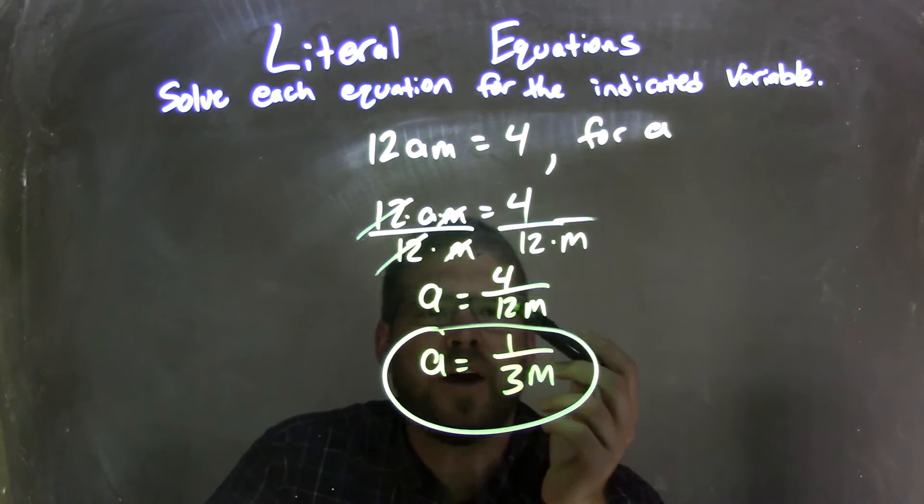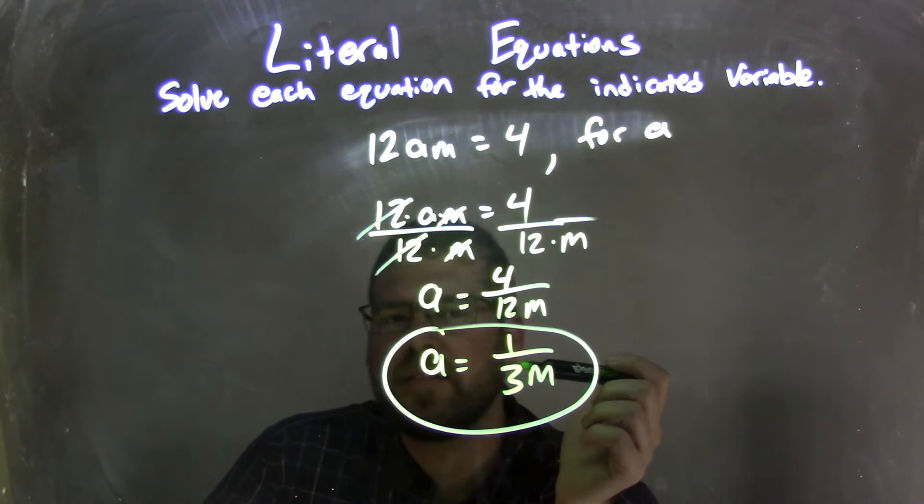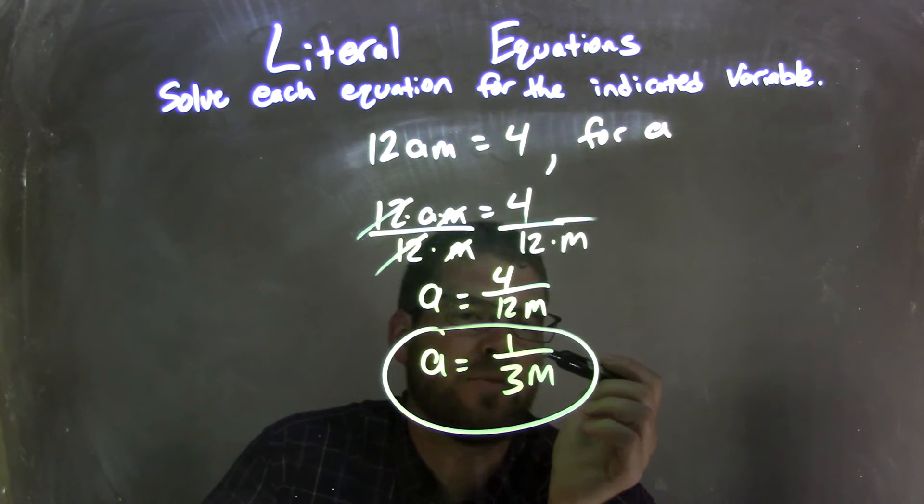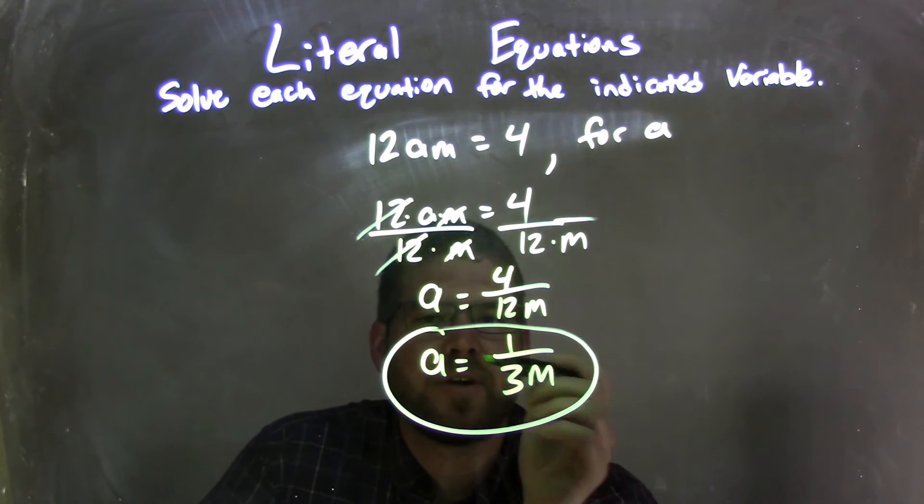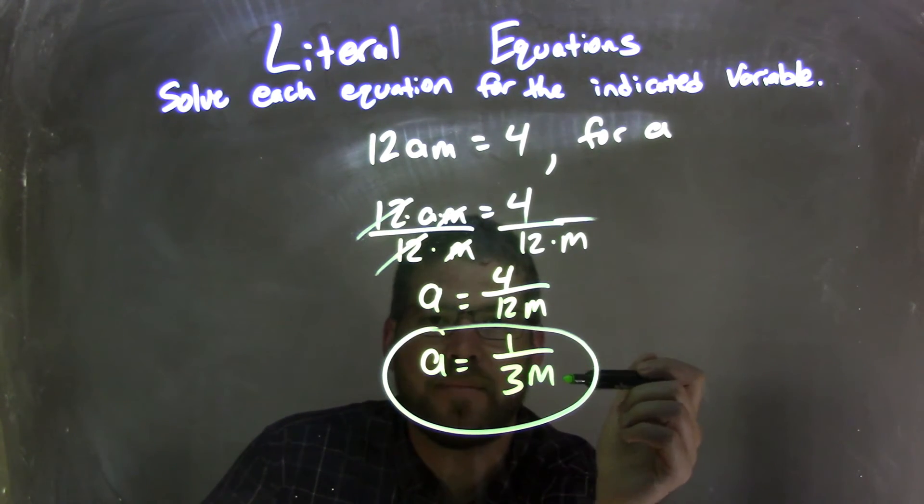From there, I simplified what's 4 divided by 12. Well, 4 divided by 12 is 1 third, right? I simplified there. That fraction 4 twelfths is 1 third, and so I have a final answer here of A equals 1 third M. That's all.